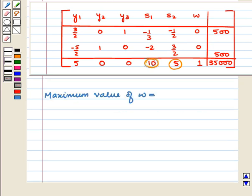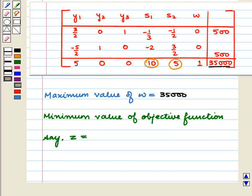Here, maximum value of w is equal to 35,000. So, minimum value of the objective function, say z in the original problem, is also equal to 35,000.